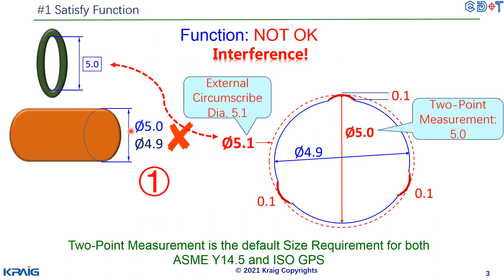One way to specify the tolerance is using an upper limit and a lower limit. If you want, you can also specify it as 4.95 plus or minus 0.05 — either way, you get the same upper limit and lower limit. Now let's have a look at whether this specification really works.